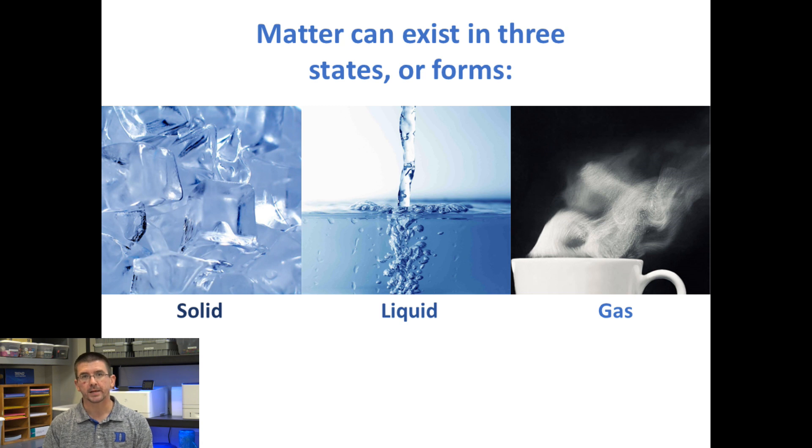Now, there are three commonly occurring states of matter. And basically, these are just different forms that a substance can exist in. The first is a solid. That means the molecules are packed tightly together, and they're packed so tightly that a solid object will actually have a fixed shape.